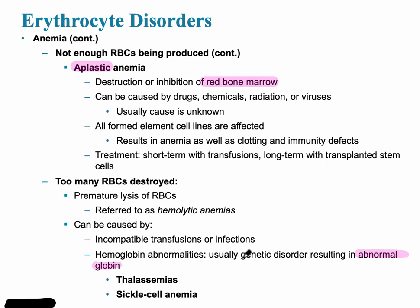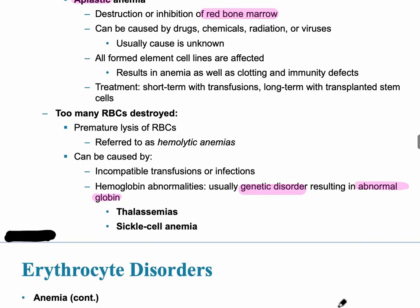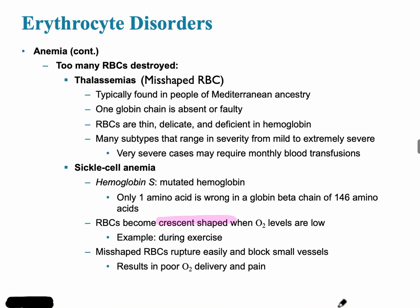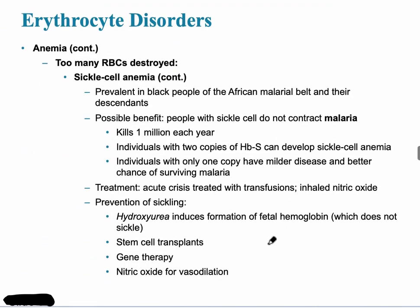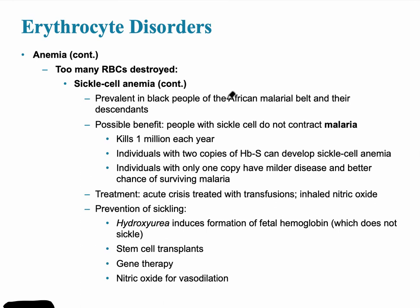The two types of genetic anemia you should know are thalassemia and sickle cell anemia. In thalassemia, a globin chain is faulty and there is a misshaped red blood cell. In sickle cell anemia, there is a crescent-shaped hemoglobin, and this condition is especially prevalent in the continent of Africa — known as the African malarial belt.